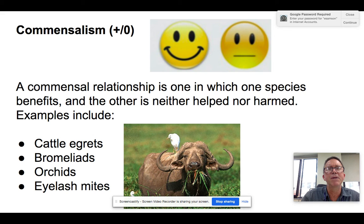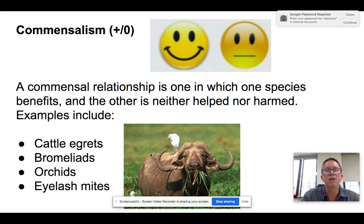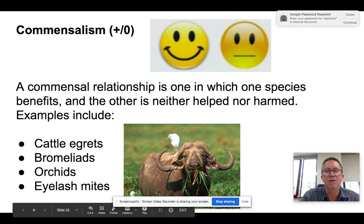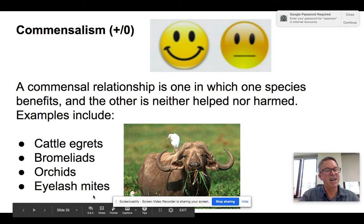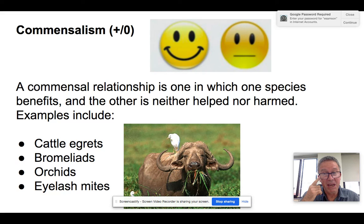And then there's commensalism, which is not that common — one organism benefits and the other is unaffected. A classic example is cattle egrets: these birds hang around a buffalo, and as it walks through grass it stirs up bugs, which the egrets eat. They're benefiting, but they're not doing anything for the buffalo. Another example is bromeliads and orchids that grow on trees — they don't hurt the trees, but the trees help them out. And there are eyelash mites, called Demodex folliculorum, that live in your eyelashes — you don't feel them, but they drink the oils from your eyelash follicles. You get nothing out of it, but they get to drink your eyelash juice.